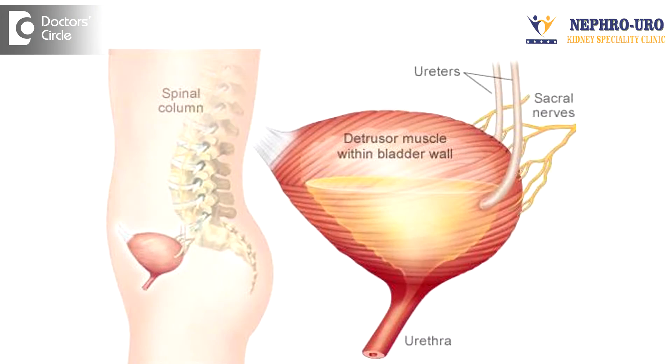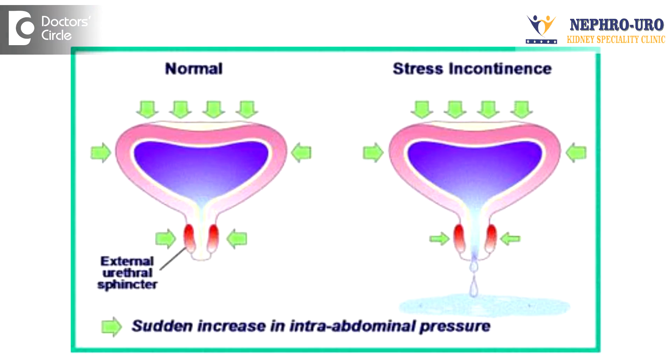Patients with detrusor instability and incontinence have to take care of themselves. What is detrusor instability? That means when the bladder fills over some position, the bladder overreacts and contracts where they leak urine, causing stress leak.